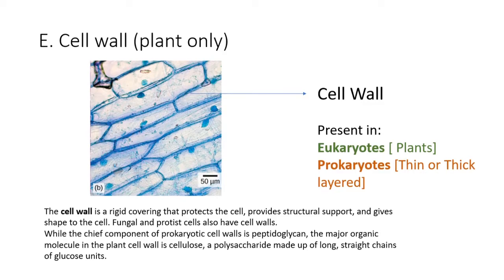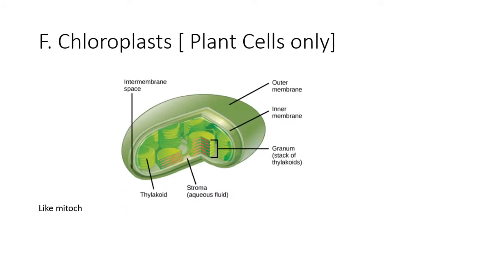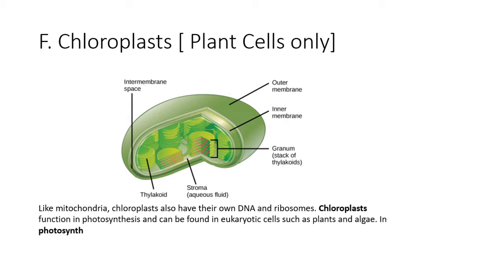Like mitochondria, chloroplasts also have their own DNA and ribosomes. Chloroplasts function in photosynthesis and can be found in eukaryotic cells such as plants and algae. In photosynthesis, carbon dioxide, water, and light energy are used to make glucose and oxygen.